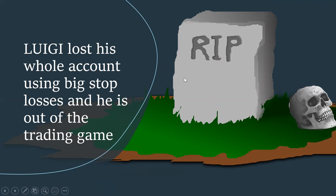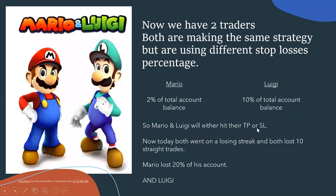Your stop loss size also matters greatly. You have to be mindful of your account size and how much of it you're willing to lose. Mario used two percent; Luigi used ten percent — which is a lot, especially for a smaller account. You've got to be mindful of the trades you take and how big a stop loss you use.